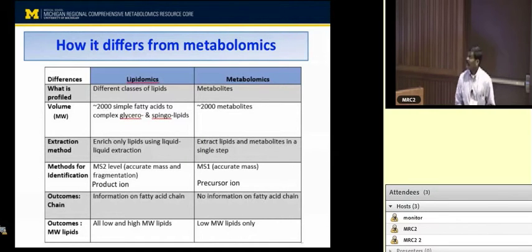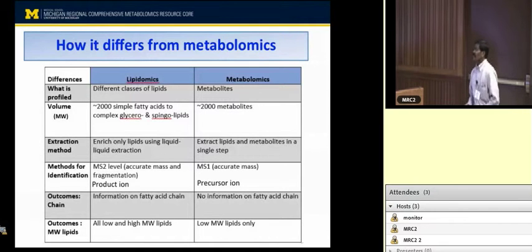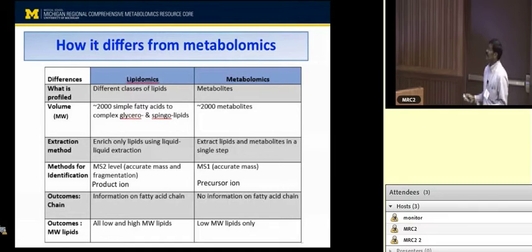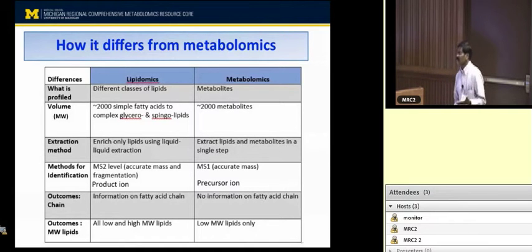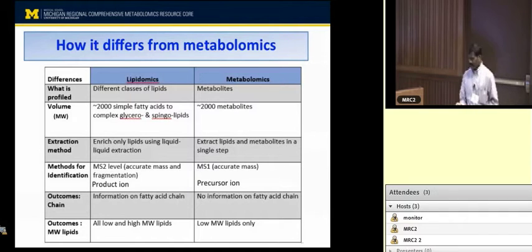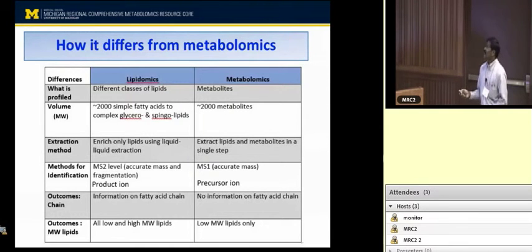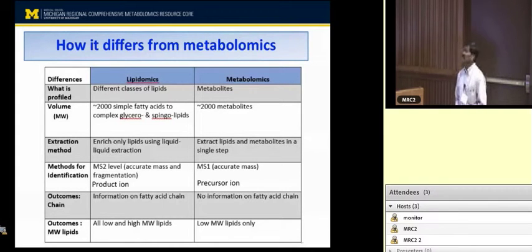The identification of metabolites in metabolomics is based on precursor ion accurate mass. Whereas in lipidomics, lipids are identified based on matching precursor ion and the product ion. In metabolomics, we do not get the fatty acid information of complex lipids. Whereas in lipidomics, MS2-based data acquisition helps us identify the fatty acid chain information. In metabolomics, we can identify only low molecular weight lipids, whereas in lipidomics we can identify all low and high molecular weight lipids. The MS2-based product ion data acquisition also helps us identify fatty acid chains and polar head group information.